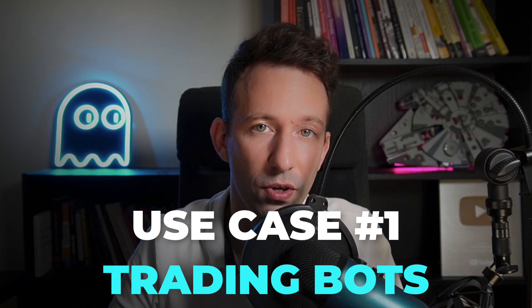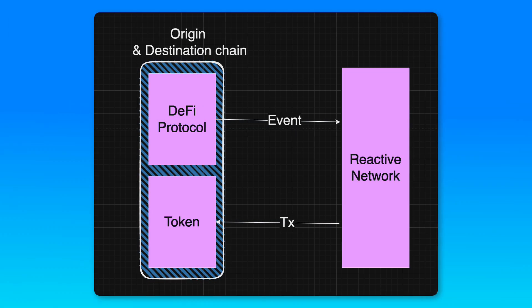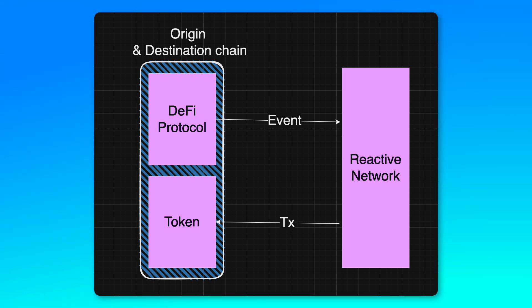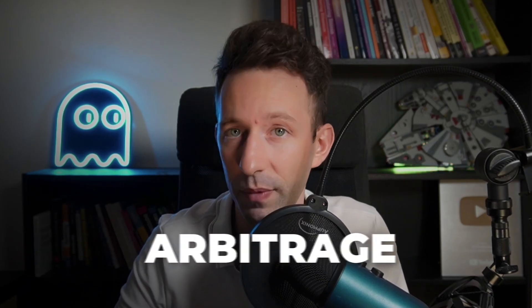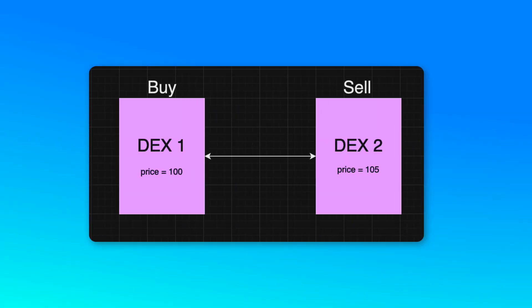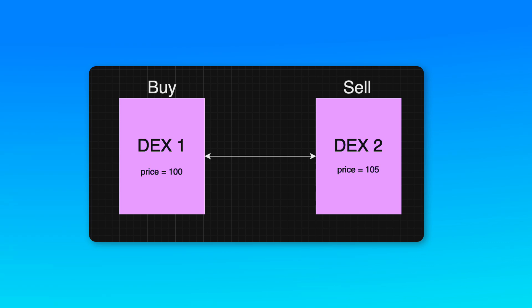Let's see a couple of use cases. First, you can use the Reactive Network for trading bots. For example, when the protocol revenue reaches a certain threshold, you want to automatically buy some tokens — you can create this very easily with the Reactive Network. Another kind of trading bot is arbitrage: when you see a price discrepancy between two decentralized exchanges, you can buy on the cheaper exchange and sell on the more expensive one.